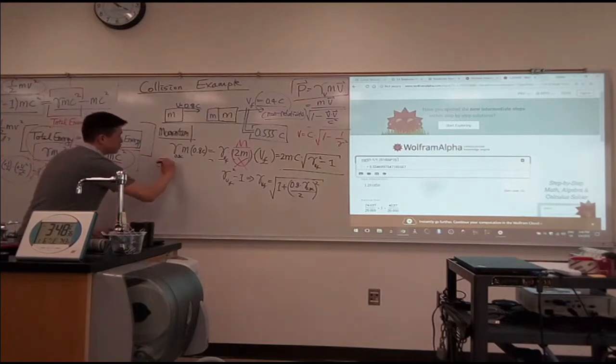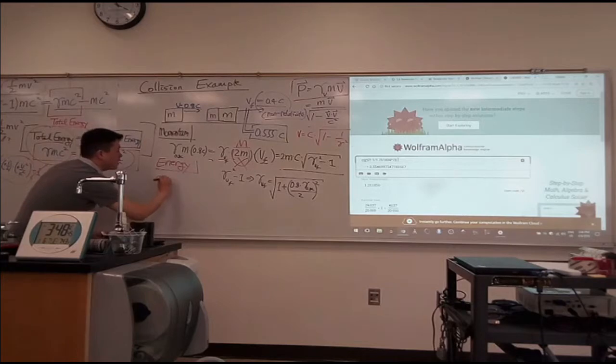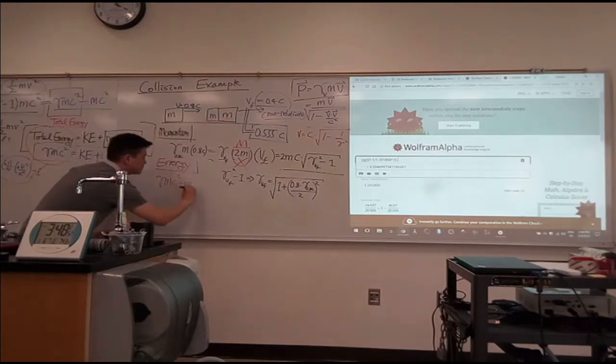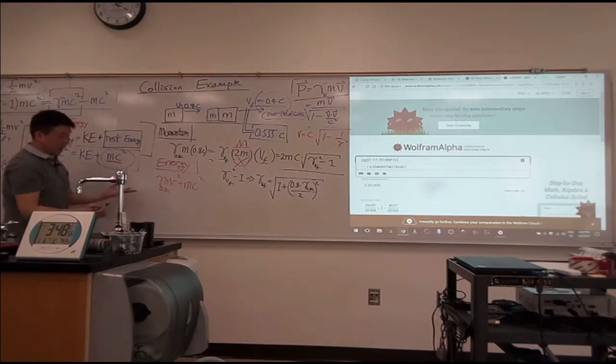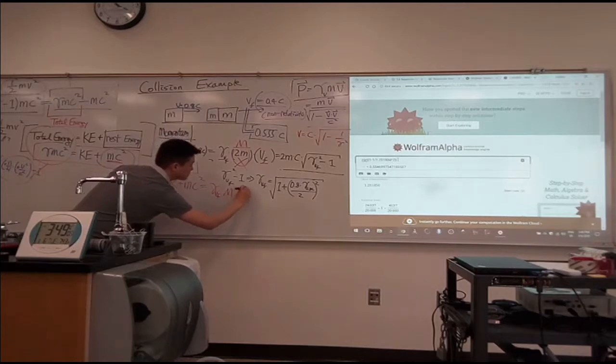But I'm saying total energy is always conserved. So you have to, in order to figure this out, you have to write down a second set of equations, which is the statement that energy is conserved. So if the total energy is conserved, then this is what I need to say. The total energy initially, gamma MC squared, plus the rest energy of that, MC squared. So gamma 0.8C. That's equal to your final total energy, which would be gamma V final times this unknown mass times C squared.